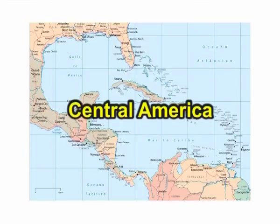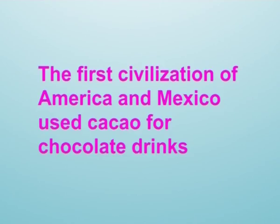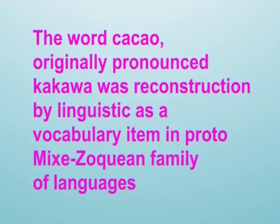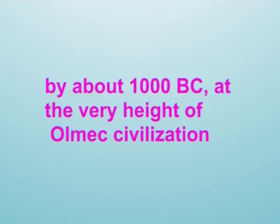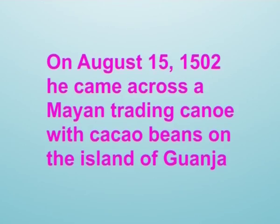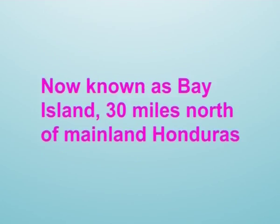History of cocoa beans: cocoa beans are indigenous to Mexico and Central America. The first civilizations of America and Mexico used cocoa for chocolate drinks; it was highly regarded as a drink for the elite only. The word cocoa, originally pronounced 'cacaua,' was reconstructed by linguists as a vocabulary item in the proto-Mixe-Zoquean family of languages by about 1000 BC, at the height of Olmec civilization. The first European encounter with cocoa took place during Columbus's voyage.